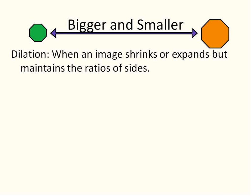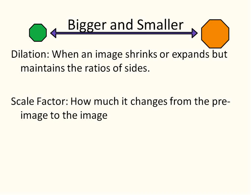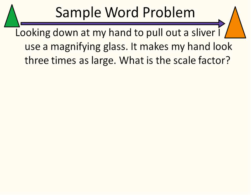Dilation is when an image shrinks or expands — becomes larger or smaller — but maintains the same ratio of the size. That's when your figure is dilating. The scale factor is how much it changes from the pre-image to the image. For today's class, we're going to consistently use green for the pre-image and yellow for the image. It starts green and changes to yellow.